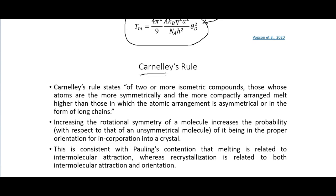Carnelley's rule states that of two or more isomeric compounds (same number of each atom, e.g. C6H14 with different structural isomers), those whose atoms are more symmetrically and more compactly arranged melt higher than those whose atomic arrangement is asymmetrical or in the form of long chains.